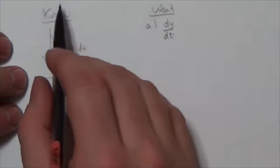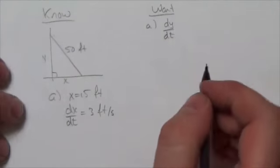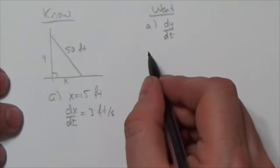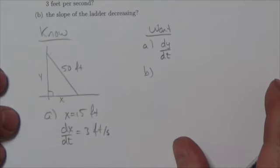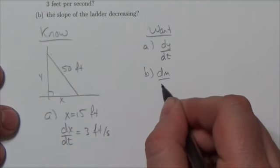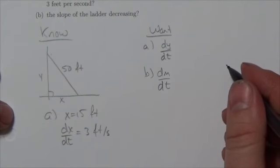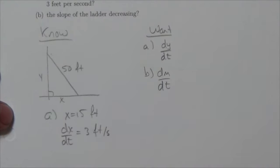Now, B is asking at what rate the slope of the ladder is decreasing. We'll talk about that in just a second because there's no new information here. So for B, we're going to create, we want to know basically dm by dt because remember m is the variable we use for slope.